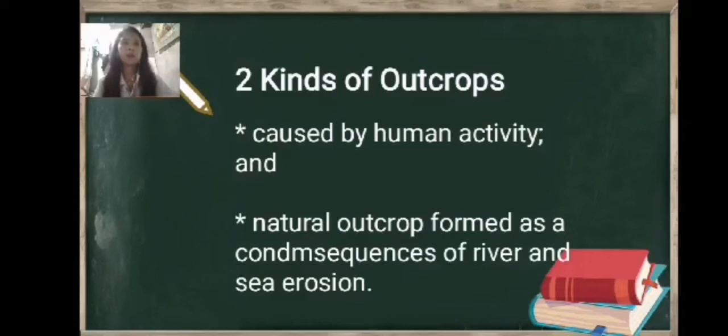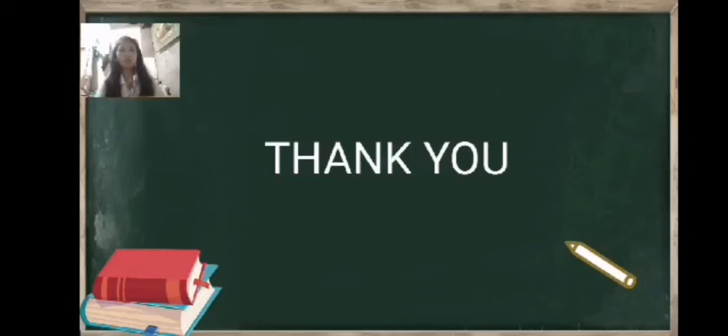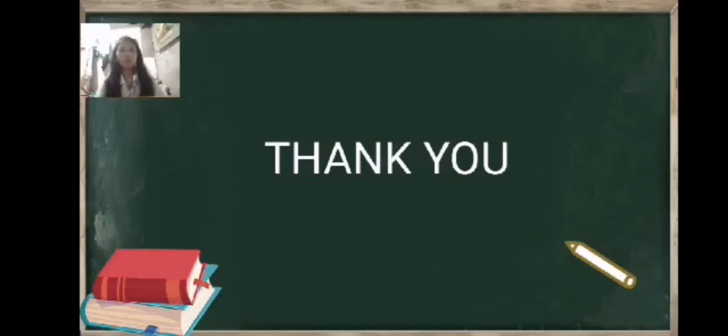Two kinds of outcrops. Number one, caused by human activity. And number two, is natural outcrop formed as the consequences of river and sea erosion. That's all and thank you. Now we will move to the next reporter of our group.